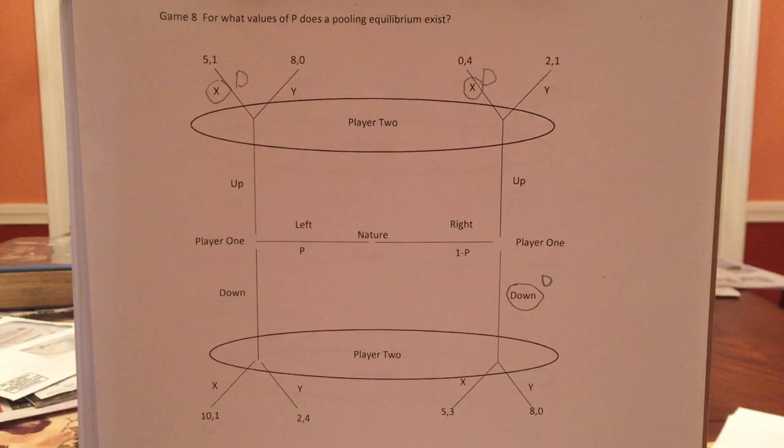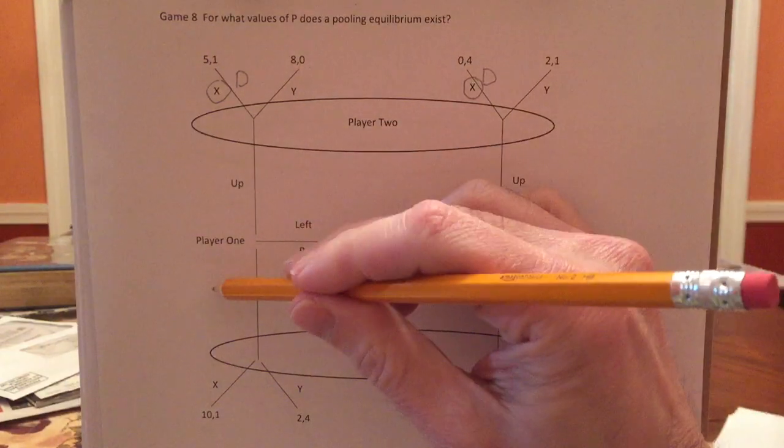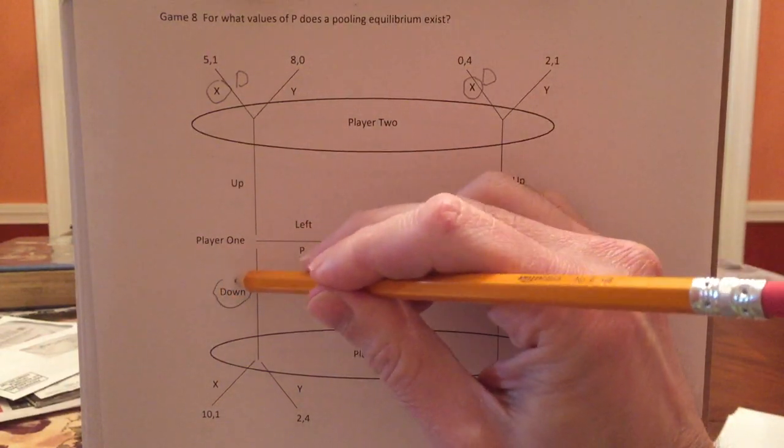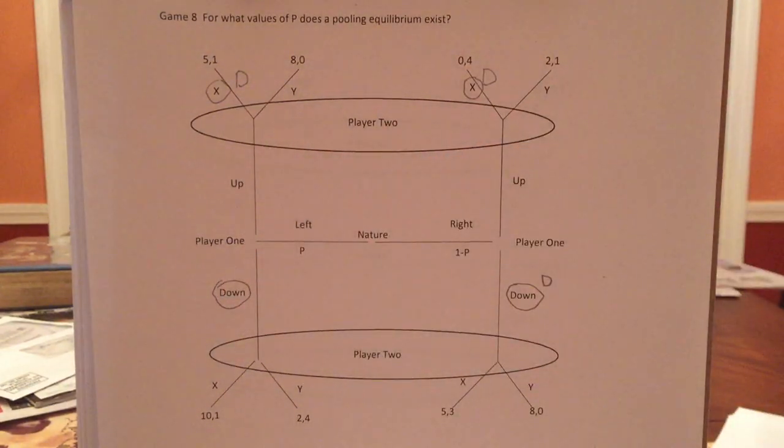Well, we know that righty is always going to go down. So if there is indeed a pooling equilibrium and the question seems to imply there is one, it must mean that lefty goes down. So if lefty were to go up, it has to be a separate equilibrium. OK, we need that for our equilibrium.